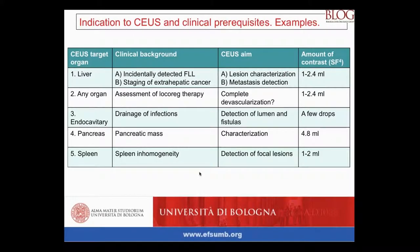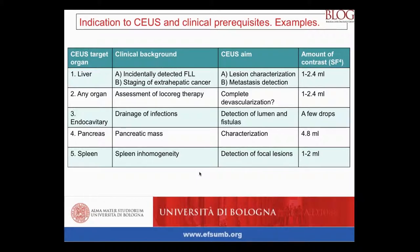To illustrate why clinical prerequisites matter: if you are requested to perform CIUS of the liver, it is mandatory to know exactly what the aim of the investigation is. If it is an incidentally detected focal liver lesion to be characterized, you have a specific setting and approach. If instead the CIUS is requested for better staging of extrahepatic cancer, you might choose a different approach and different amounts of contrast - depending on what you expect to see and on the clinical question.